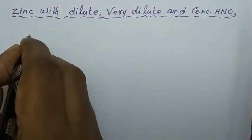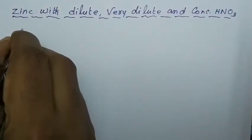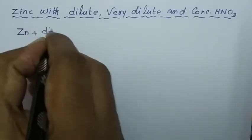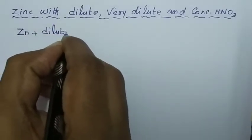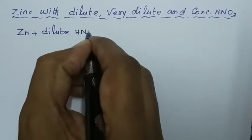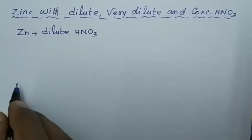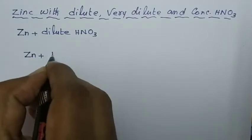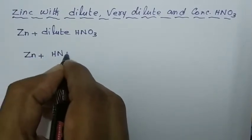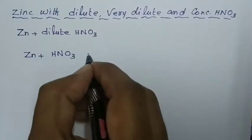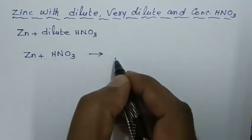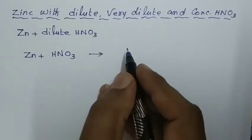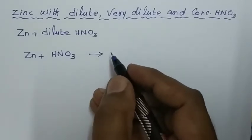First reaction: Zn with dilute nitric acid HNO3. Zinc plus nitric acid — metal undergoes oxidation-reduction. Zinc has only one oxidation state, plus two. The valency of zinc in all the compounds is two.